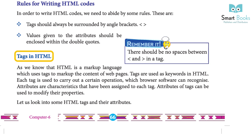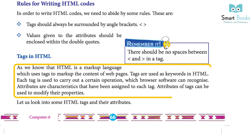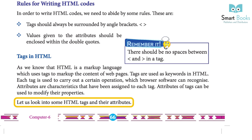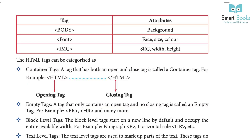Tags in HTML: HTML is a markup language which uses tags to mark up the content of web pages. Tags are used as keywords in HTML. Each tag carries out a certain operation which browser software can recognize. Attributes are characteristics assigned to each tag and can be used to modify their properties.